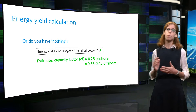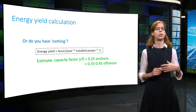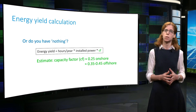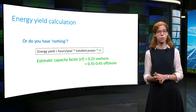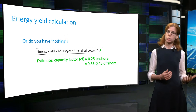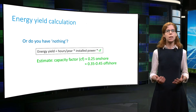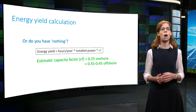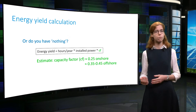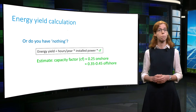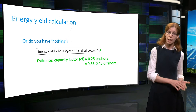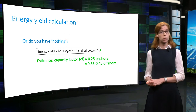If we further multiply this quantity by the number of hours in a year, the estimate is expressed in terms of watt-hour per year, which is a measure of energy. As we saw previously, typical values of the capacity factors are 0.25 onshore and up to 0.45 offshore. Remember that the capacity factor depends on the size of the turbine and also its location.